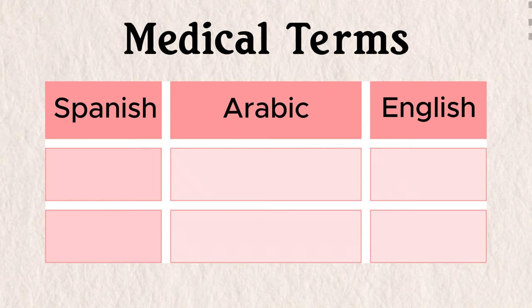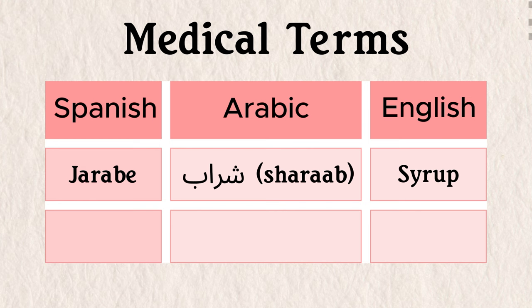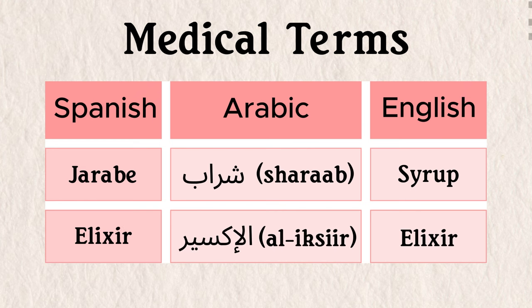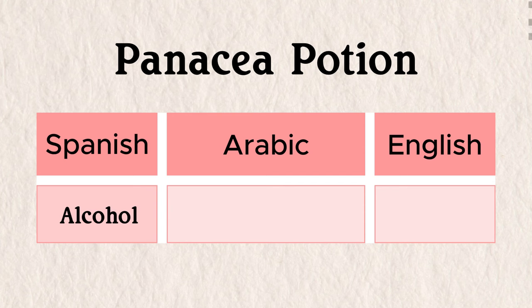Spanish also got medical terms from Arabic like: jarabe (syrup) from sharāb; elixir (elixir) from al-iksīr; and most importantly, alcohol (alcohol) from al-kuḥūl. That's right — alcohol was given to us by a people whose holy book forbids its consumption. Irony really is the hot sauce of history.